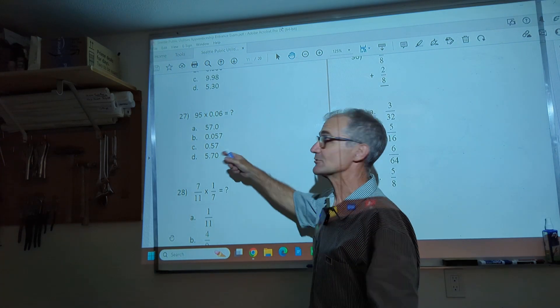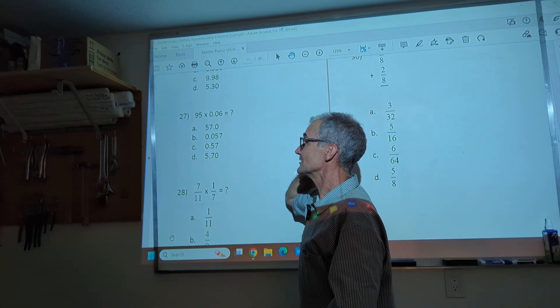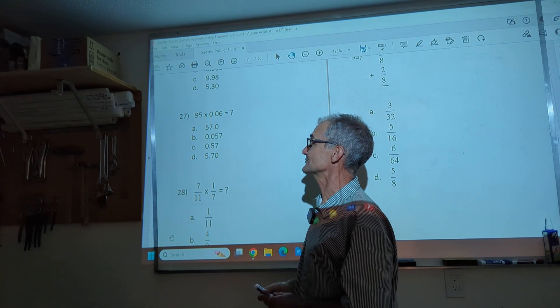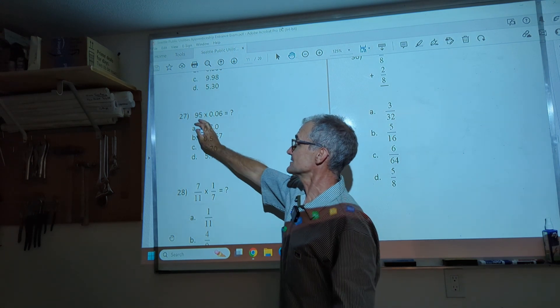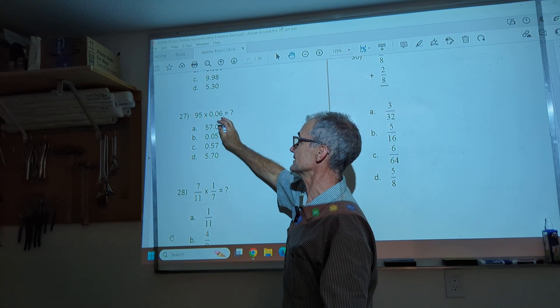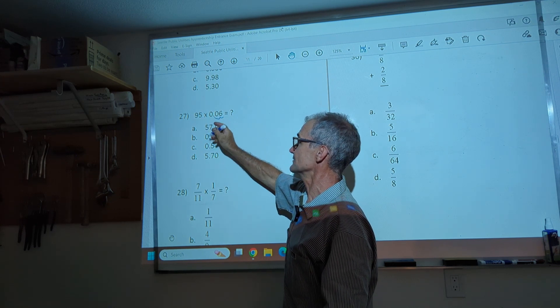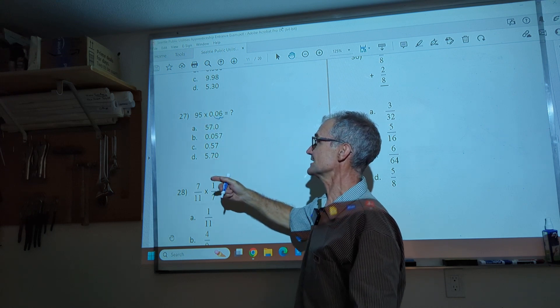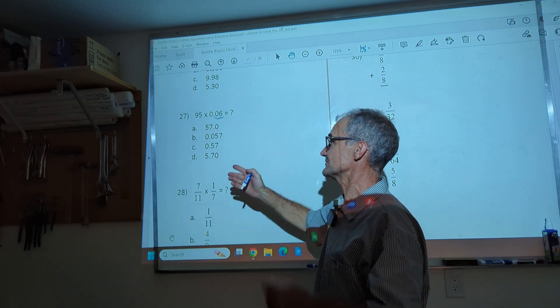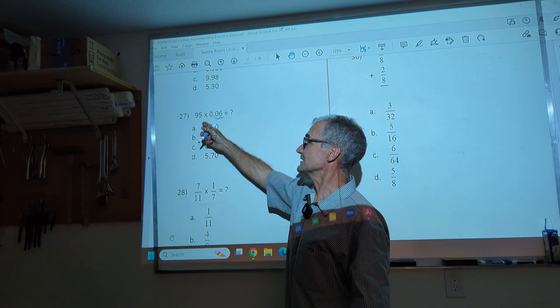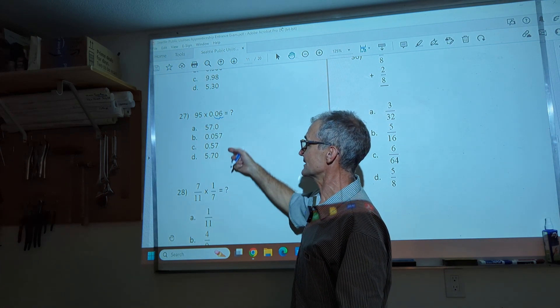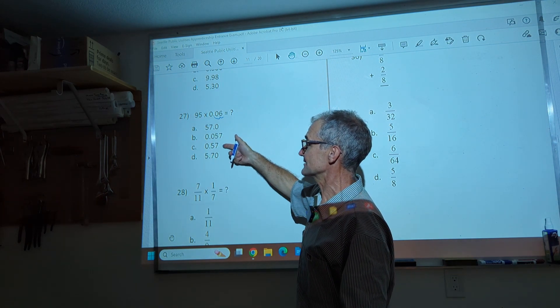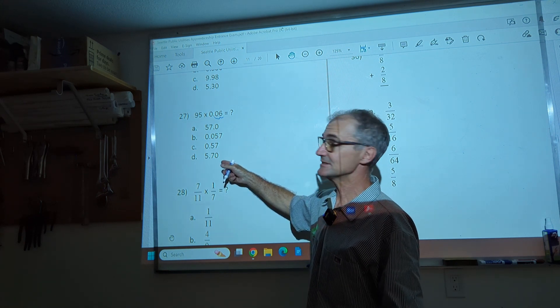Number 27 right here. Now we're multiplying decimals, not adding them. The rule is keep track of how many decimal places it's over. So here it's not over any. It's 95.0. And here it's over 1, 2. 0.06 is 6%. 95 is close to 100. 5% of 100 is about 5. If I look at my answers, there's nothing here even close to 5 except for one of them. So it's going to be answer D.